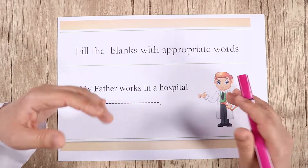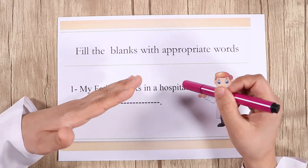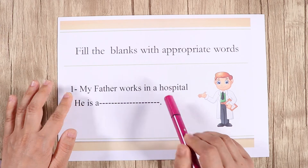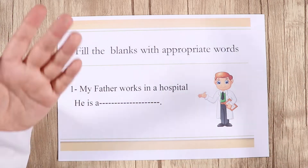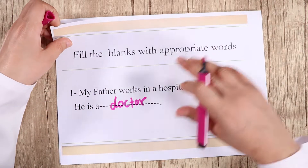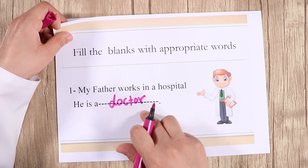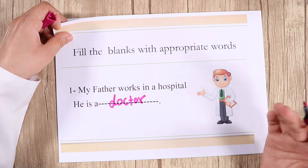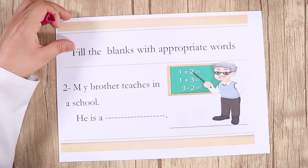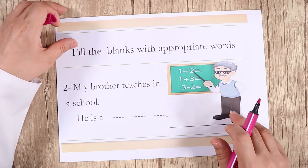This part is related to jobs — وظایف. When someone says, for example, 'My father works in a hospital,' what is his job? He is a doctor. You can say 'He is a doctor.' You cannot say 'He is a hospital' — this is wrong. He is a doctor.